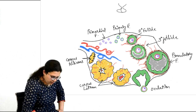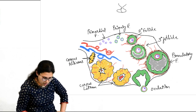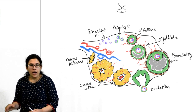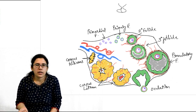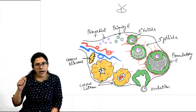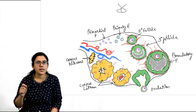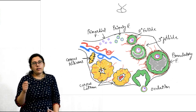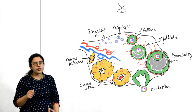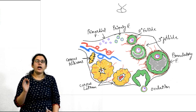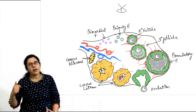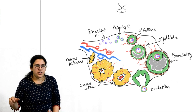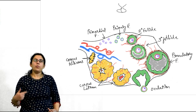All these primary oocytes lie latent in the ovary. When puberty starts — and an important MCQ: what is the first indicator of onset of puberty? It is pulsatile release of gonadotropin releasing hormone from the hypothalamus. These impulses are mostly at night first, then become daytime, then increase in frequency. Hypothalamus releases GnRH pulses which act on pituitary, releasing FSH and LH, which act on the ovary, and the ovarian cycle starts.